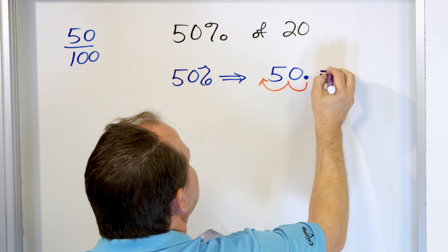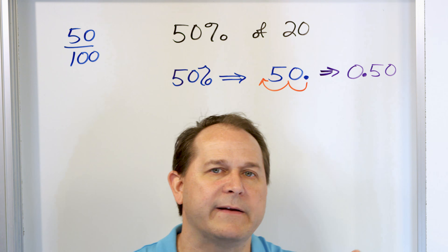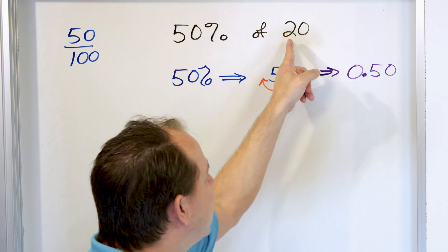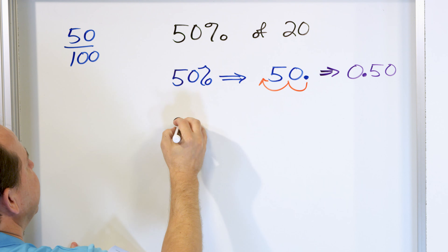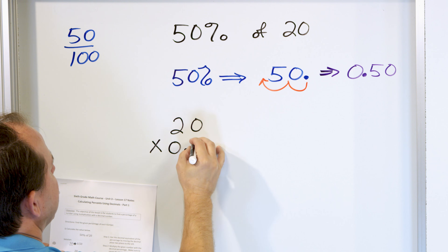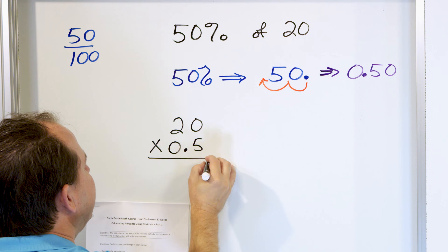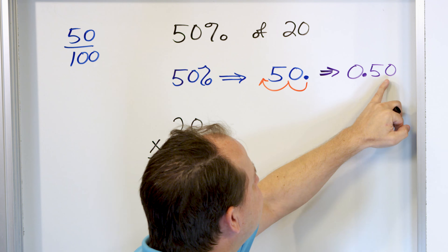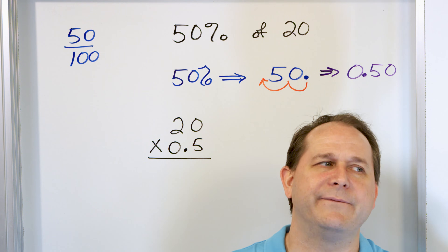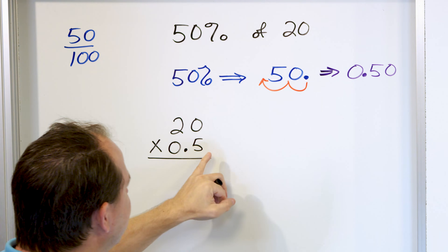So 0.50 is the decimal equivalent of 50%. Just like in the last lesson we found the fraction equivalent and multiplied by the fraction, here we're going to be multiplying by the decimal equivalent to cut the 20 down. So let's say we have 20 pencils and we're going to take 50% by multiplying by 0.5. Notice the answer is 0.50 — the trailing zeros don't mean anything. 0.5 is the same as 0.50. So I can just multiply by 0.5.